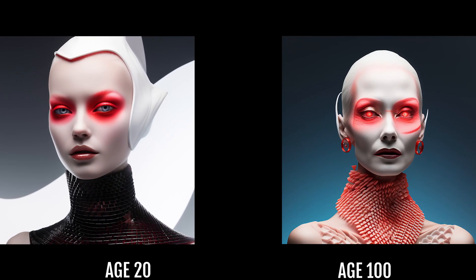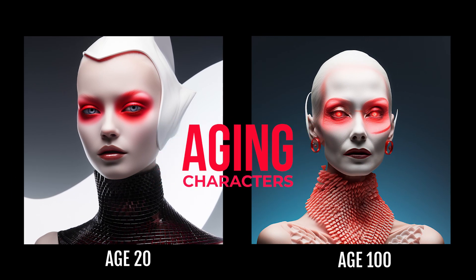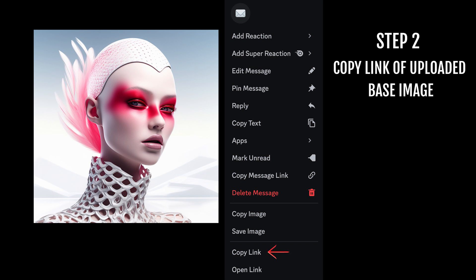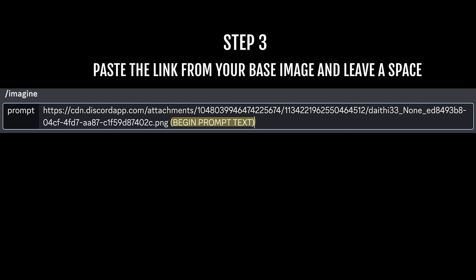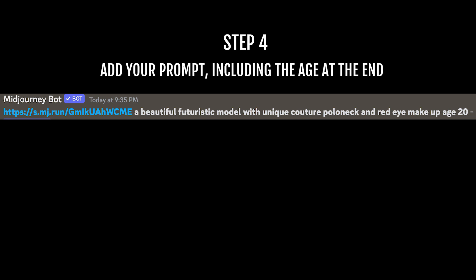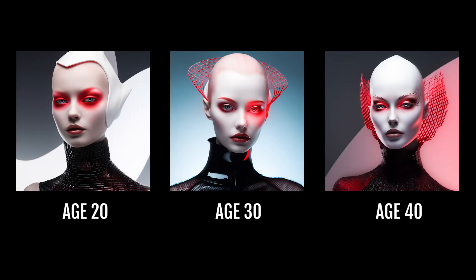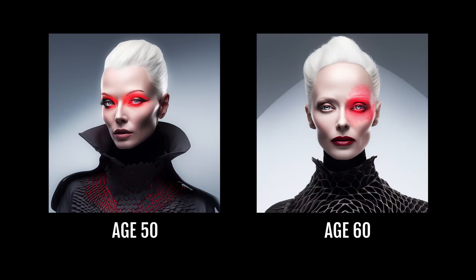I've had many queries regarding the creation of consistent aging of characters on Mid-Journey. I will share the key to unlocking this technique. Begin by sculpting a character that resonates with your creative vision. Once selected, insert your chosen image as an image prompt. When you hit enter, your base image will upload. Right-click the uploaded image until you see a pull-down menu, copy the link of the uploaded base image, and paste it into your prompt window in Mid-Journey. Leave a space after this link and begin your prompt, including the age you want the generated outcome to be. Repeat the same prompt for each additional age you would like, and witness the astonishing metamorphosis as your character appears at the ages you select.